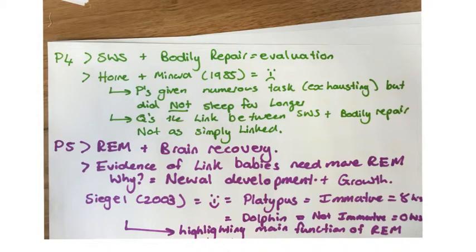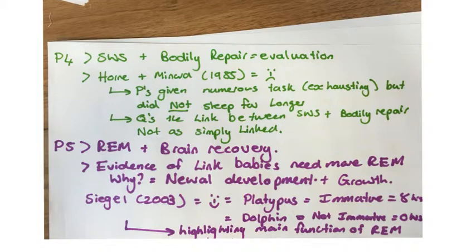This is where we get into an evaluation for slow-wave sleep and bodily repair. Horne and Mynard in 1985 provide a criticism of the overarching theory. Participants were given numerous exhausting tasks but did not sleep for longer, which is contradictory to what Shapiro and Harmon found. This questions the link between slow-wave sleep and bodily repair — maybe it is not as simply linked as we once thought, and other avenues need to be explored.